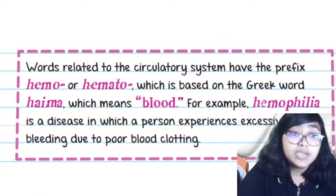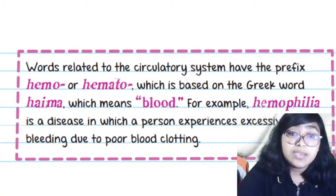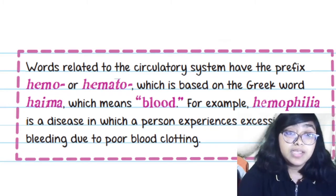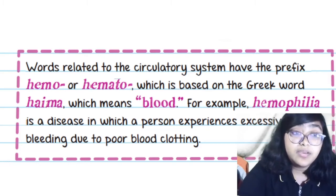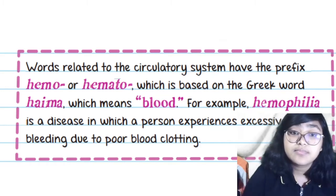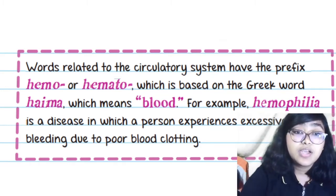Words related to the circulatory system often have the prefix 'hemo' or 'hemato,' which comes from the Greek word 'hema' meaning blood. For example, hemophilia — a disease where a person experiences excessive bleeding due to poor blood clotting.